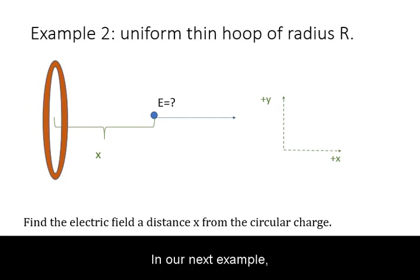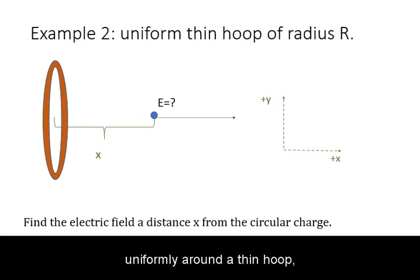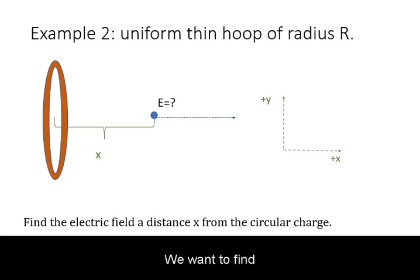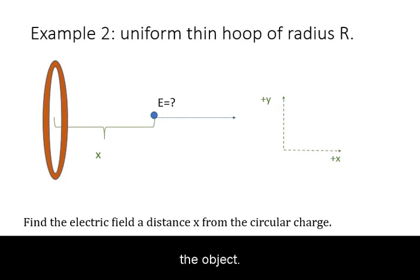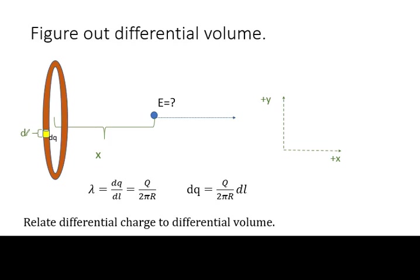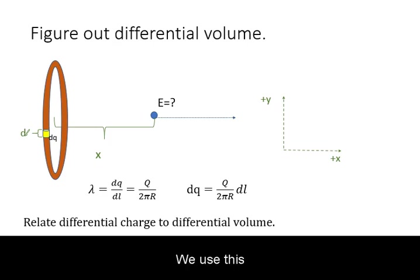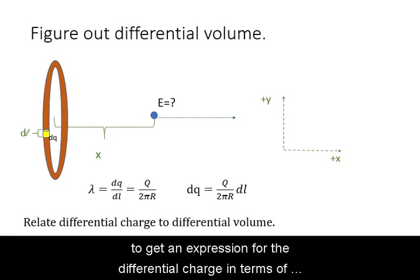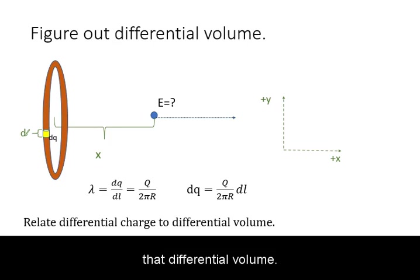In our next example, we consider a charge distributed uniformly around a thin hoop of radius r. We want to find the electric field at some distance x along the axis of the object. We once again break the charge into differential volume elements and use this to get an expression for the differential charge in terms of that differential volume.